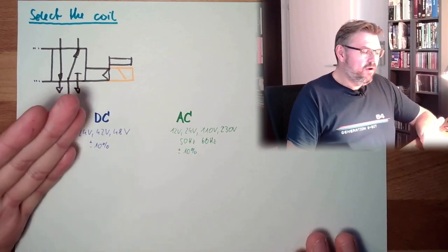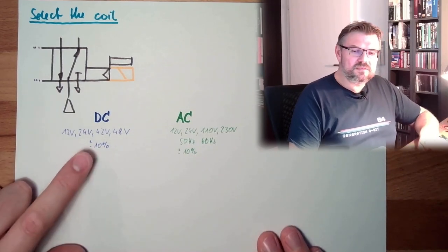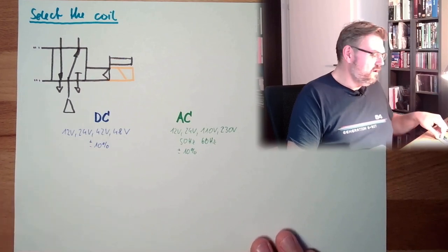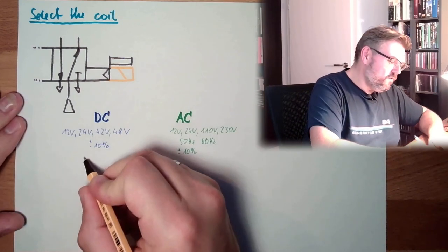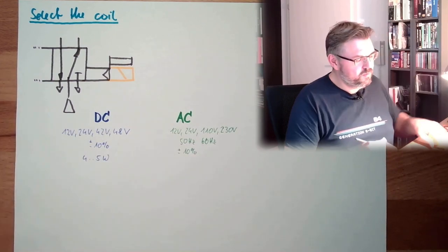How much power do we drain? These DC coils, they usually use somewhere around 4 to 5 watts. This is the typical power.